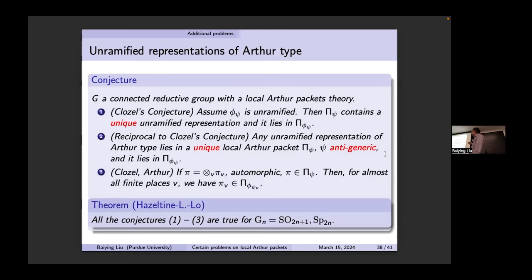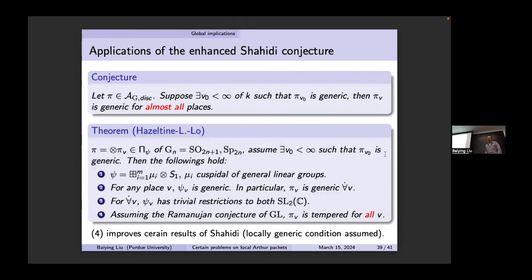We give a characterization of unramified representations of Arthur type and, using the serial intersection for local Arthur packets, we prove all three of these conjectures are true for these two groups. We recall we proved the Shahidi conjecture, and there are nice applications towards global representations. The general conductor conjecture: if you have a discrete globally automorphic representation and one finite place is generic, then almost all places are generic — this is the rigidity of being generic.